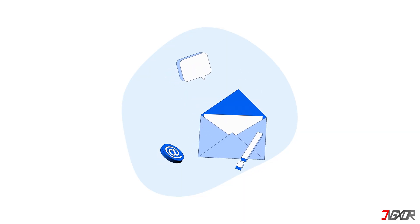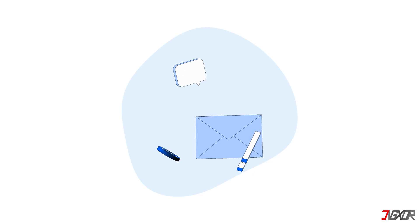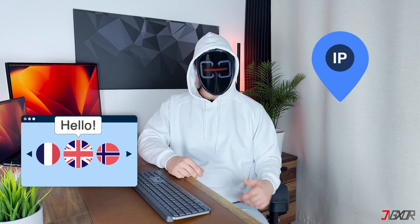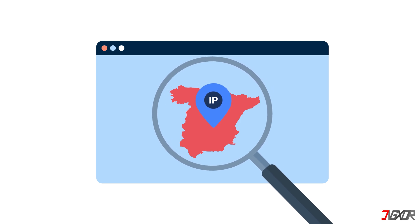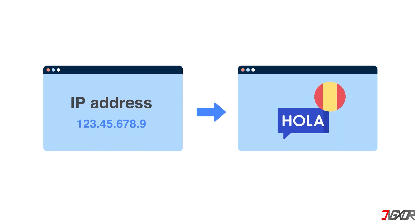Your IP address is essential for websites to function — think of it like sending a letter, where the sender needs your address to deliver it. Since IP addresses are tied to specific regions, websites use them to automatically select the right language for their content. For example, if a website detects an IP address from Spain, it'll probably show the website in Spanish. Your GPS location is much more private — websites can only access it if you explicitly allow them to.